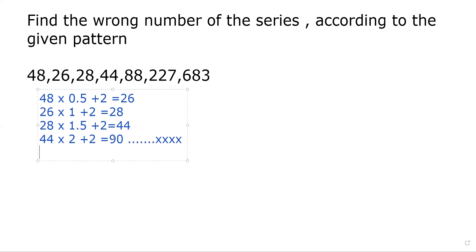And if we check the relation between the fifth and sixth number, we can see that 90 × 2.5 + 2 equals 227. Yes, it is 227.